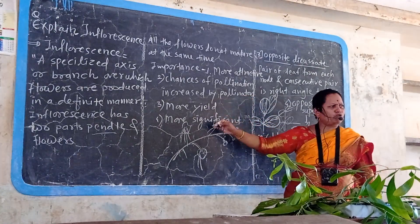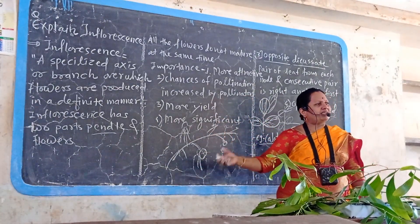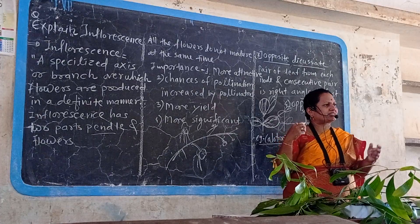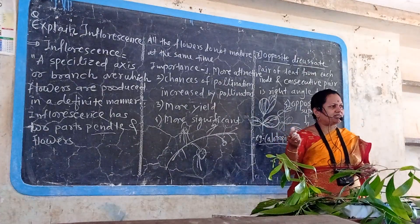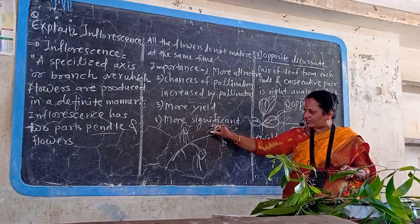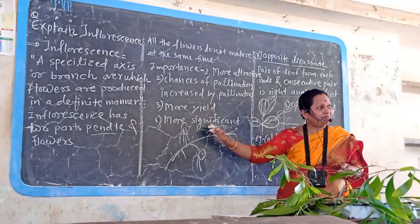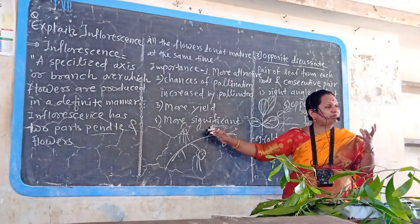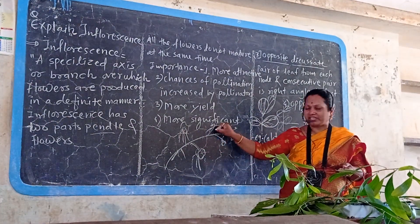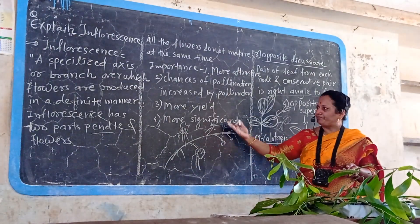There are more chances of pollination. When any type of pollinating agent — that is birds, insects, or honeybees — comes towards the inflorescence, many pollen grains are attached to their body and the chances of pollination are increased.